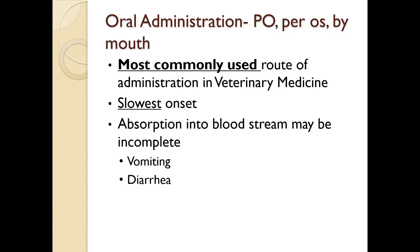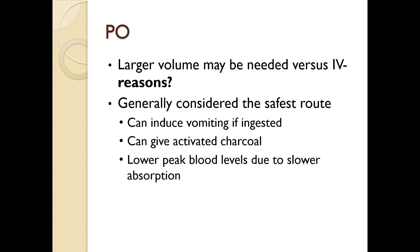Oral administration is PO, also called per os or by mouth. It's the most commonly used route in veterinary medicine. It has the slowest onset of action and absorption into the bloodstream may be incomplete, so bioavailability is on the lower percentage side. Some problems include vomiting and diarrhea — if the animal is already vomiting or has diarrhea, that will change whether the drug is absorbed completely. A larger volume is typically needed versus IV because of the bioavailability of the drug.